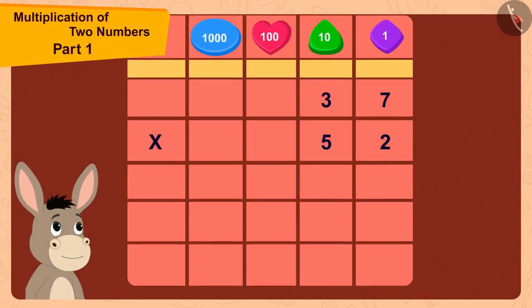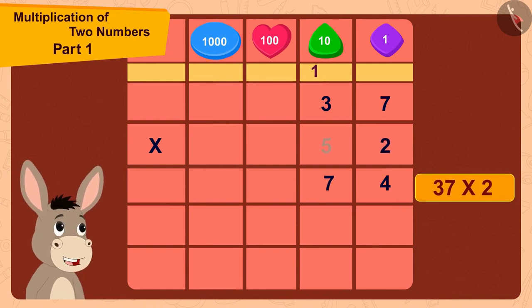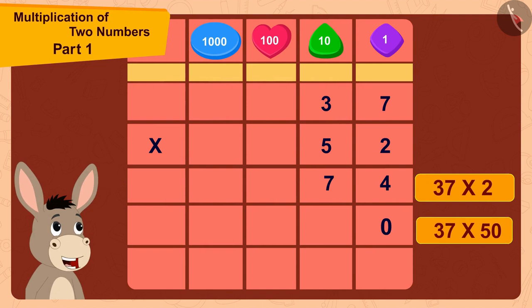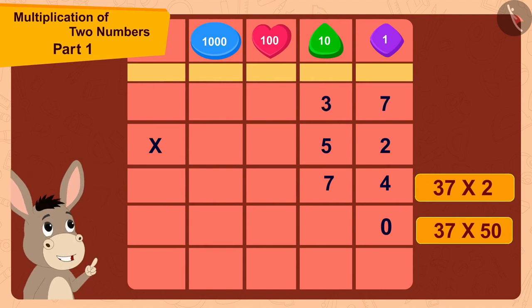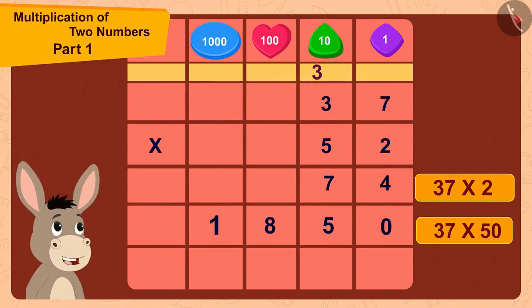37 multiplied by 2 is 74. Now, I will first write 0 here and then multiply 37 by 5.